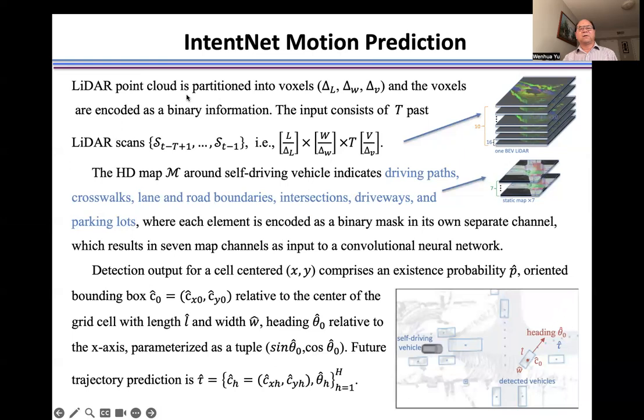We partition the LiDAR point cloud into voxels to get a 3D bird's eye view tensor. Suppose we have T past LiDAR scans, then we can concatenate them together in the depth direction to form a sequence of bird's eye views.